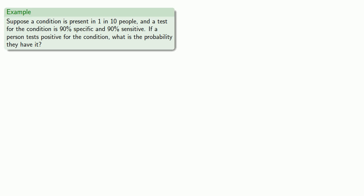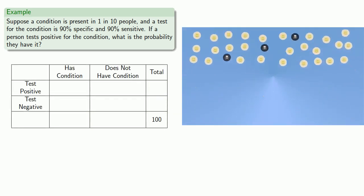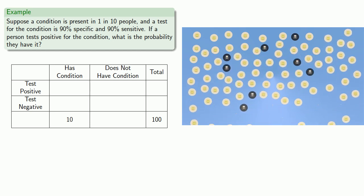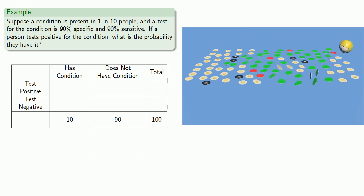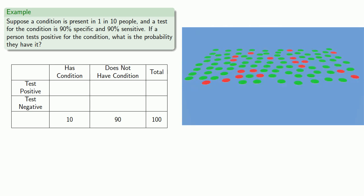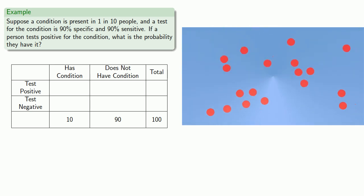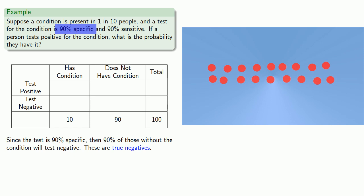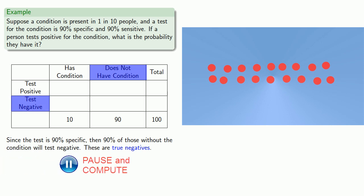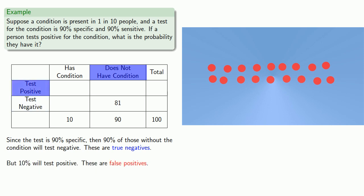Suppose we test 100 people. Since the condition is present in 1 in 10 persons, then 10 of them will have the condition and 90 will not. Since the test is 90% specific, 90% of those without the condition will test negative — these are the true negatives, and there are 81 of them. The remaining 10% will test positive — these are the false positives, and there are 9 of them.